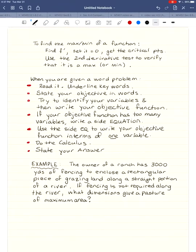We know how to do the calculus part. If you're given a function and you want to find its maximum and minimum, you just take the derivative, set it equal to zero, and get all your critical points. Then, since we're not interested in the graph in this section, we'll use the second derivative test to verify that your critical point gives you the max or min.